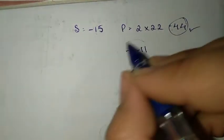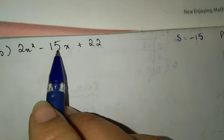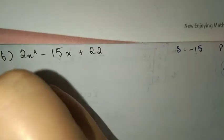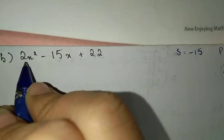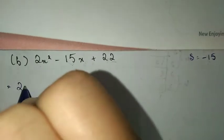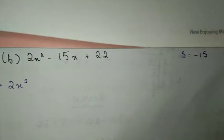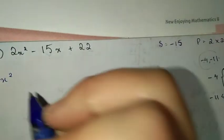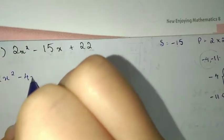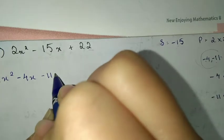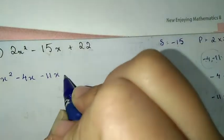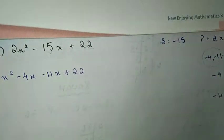If both are minus, minus into minus when multiplied gives plus 44. So the two numbers are minus 4 and minus 11.